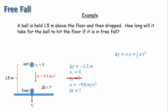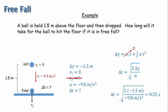To simplify the equation a bit, I'll recognize that the initial velocity is 0, and now we can solve algebraically for the time. And then plugging in the values, we get that the time is 0.55 seconds, which seems like a reasonable number if you can imagine dropping a ball from a height of 1.5 meters.